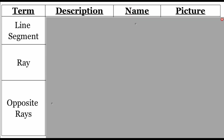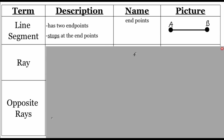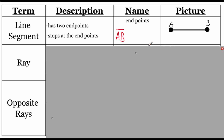A few more vocabulary words to look at: line segment, ray, and opposite rays. For a line segment, it's very similar to a line, but instead of extending in both directions, we've got a couple of endpoints where the line stops. Looking at the picture, we've got point A on the left and point B on the right. When naming a segment, we use those endpoints — just like a line, order does not matter, so we could name it AB, shown with a line over top but no arrowheads. We could also name it BA.